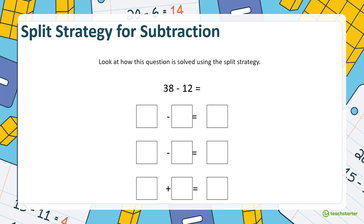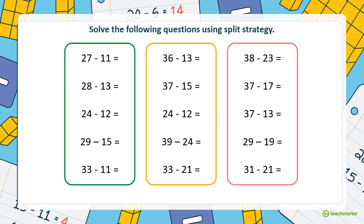Look at how these questions are solved using the split strategy. For 38 minus 12: first step, take away the tens — 30 minus 10 equals 20. Then 8 minus 2 equals 6. Add them together: 20 plus 6 equals 26. You can use these questions as a reference — this slide will be in your Google Classroom so you can answer each of these using the split strategy.